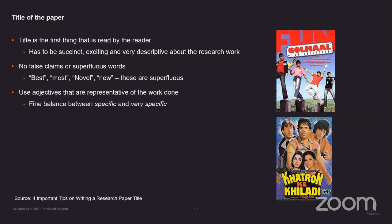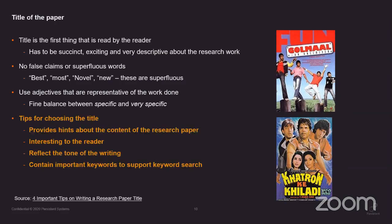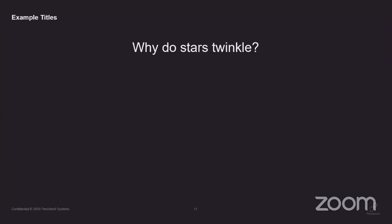Some tips for choosing a title: provide a hint about the content, keep the title interesting, make the reader want to read the paper. The tone should reflect the paper — if the title is very formal, the paper is expected to be formal. If the title includes important keywords, it helps with keyword searches and your papers show up in Google searches. Make sure keywords relevant to your paper are part of the title.